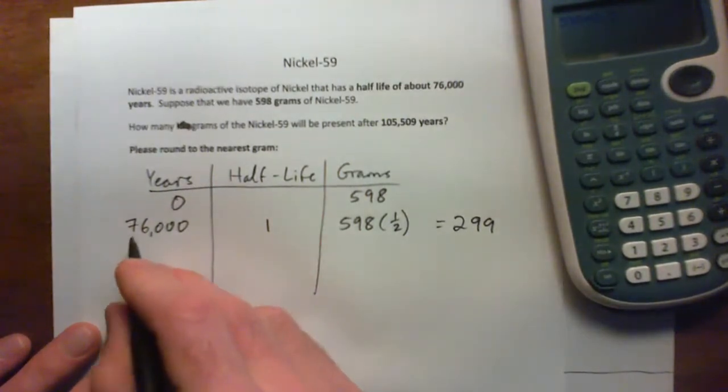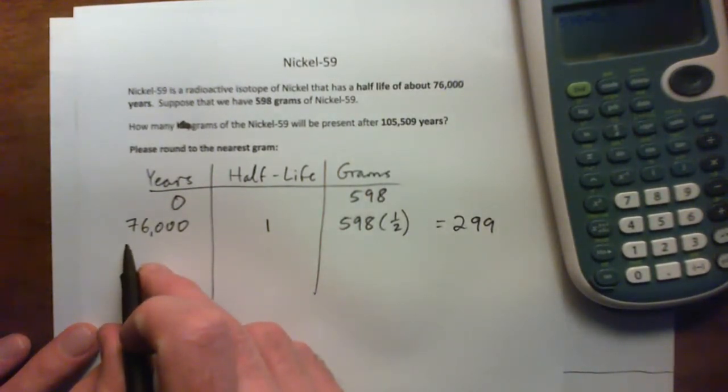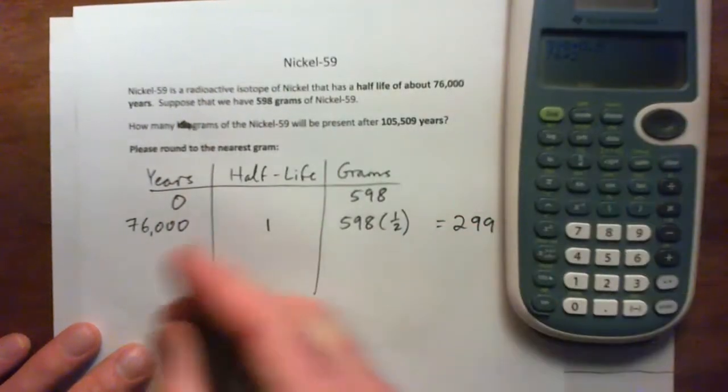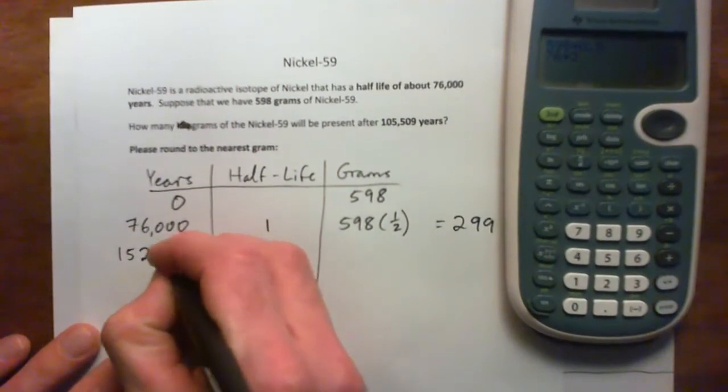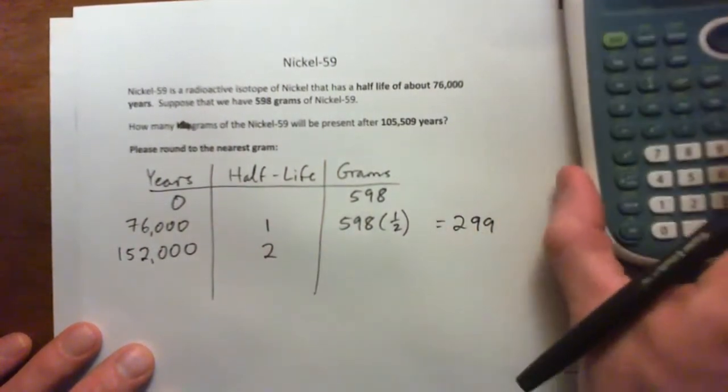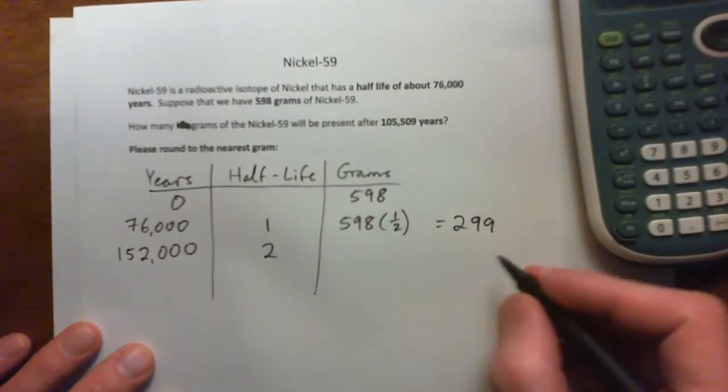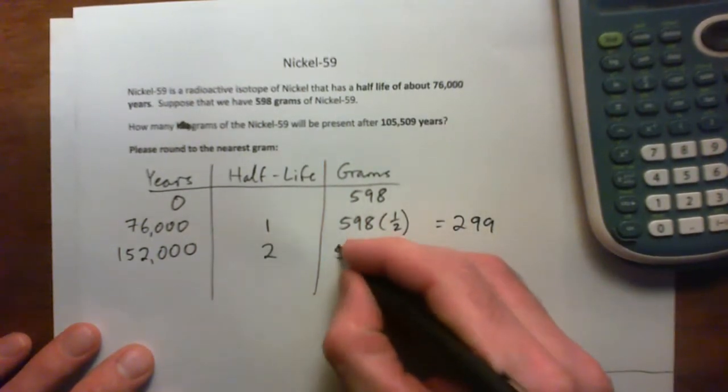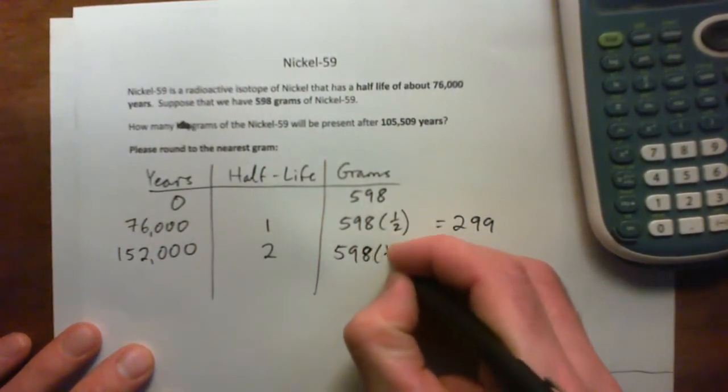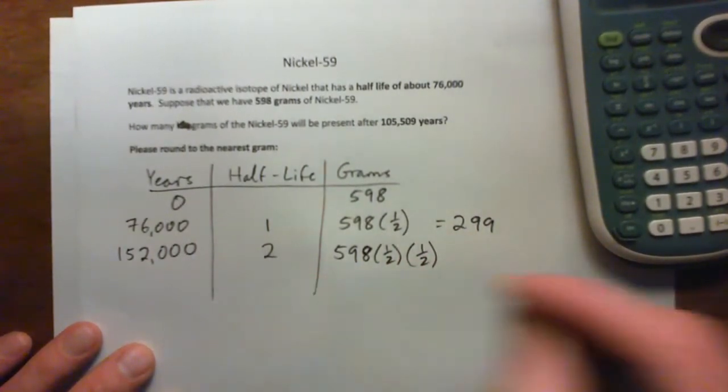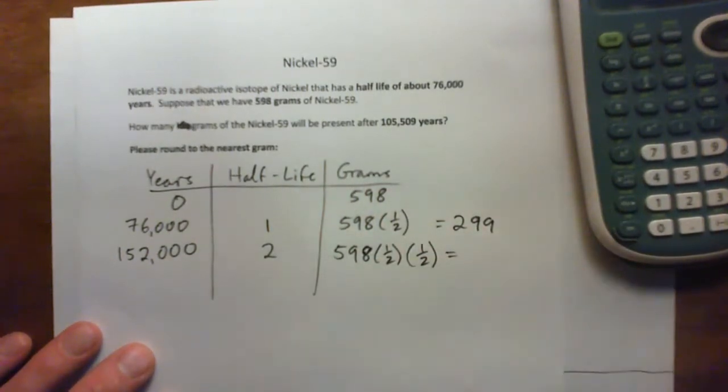And twice this is 152,000. So after 152,000 years, I'm just doing this for fun, that's two half-lives. We'll have half of this left, so it'll be 299 times a half, or 598 times a half to get 299, and then times a half again to get half of this again.